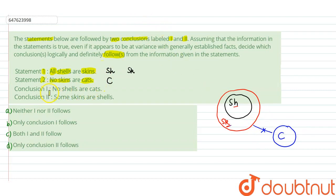अब हम conclusions check करते हैं according to the statements. So conclusion 1 says No shells are cats. क्या ये true है? shells तो skin की circle के अंदर है और हमसे कहा गया था कि कोई भी skin cat नहीं है तो skin के अंदर का कोई भी component जैसे हमारे पास यहाँ पे है shell वो भी cat नहीं हो सकता तो हमारा conclusion number one सही हो जाएगा.